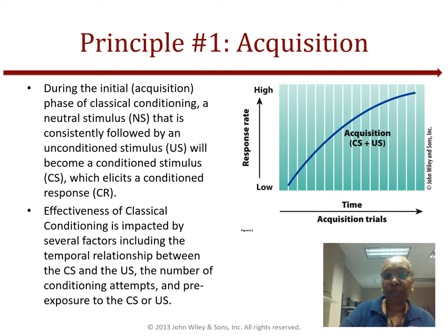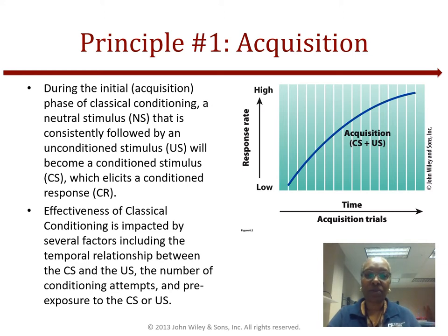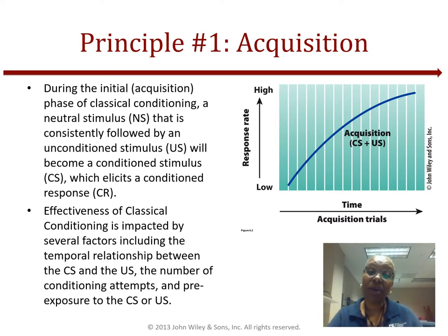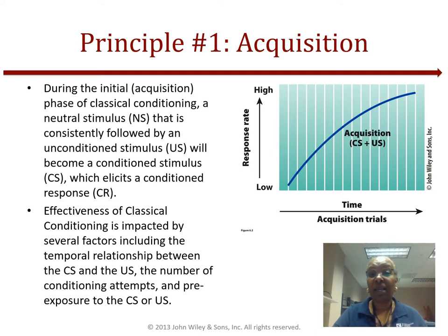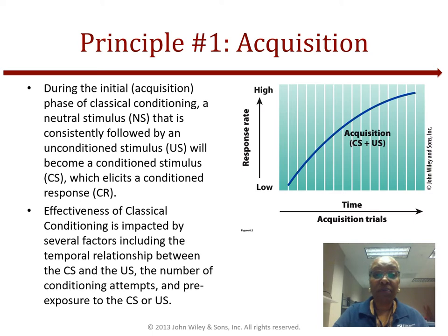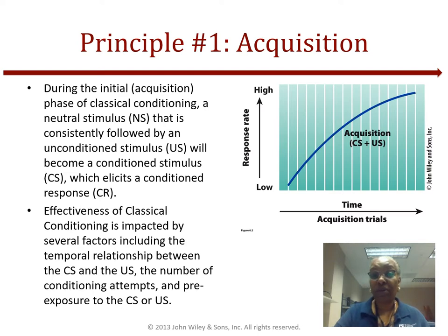Going back to principle number one, the process of acquisition happens during the initial phase of classical conditioning, where a neutral stimulus consistently followed by an unconditioned stimulus becomes a conditioned stimulus, which then elicits a conditioned response. During the acquisition phase, the subject shows an increasing response to the stimulus that is repeated over and over again through exposure, or through trials if you're doing research.